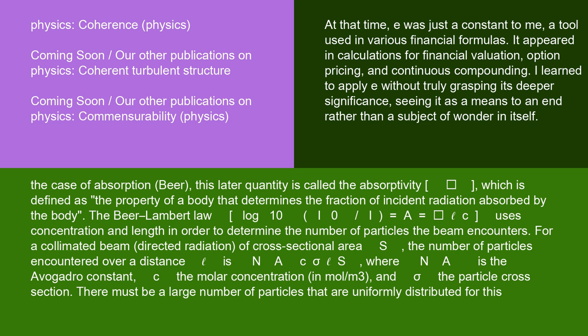For the case of absorption (Beer), this latter quantity is called the absorptivity ε, which is defined as the property of a body that determines the fraction of incident radiation absorbed by the body. The Beer-Lambert Law log₁₀(I₀/I) = A = εcℓ uses concentration and length in order to determine the number of particles the beam encounters. For a collimated beam of cross-sectional area S, the number of particles encountered over a distance ℓ is Nₐcσ Sℓ, where Nₐ is the Avogadro constant, c the molar concentration in mol/m³, and σ the particle cross-section.